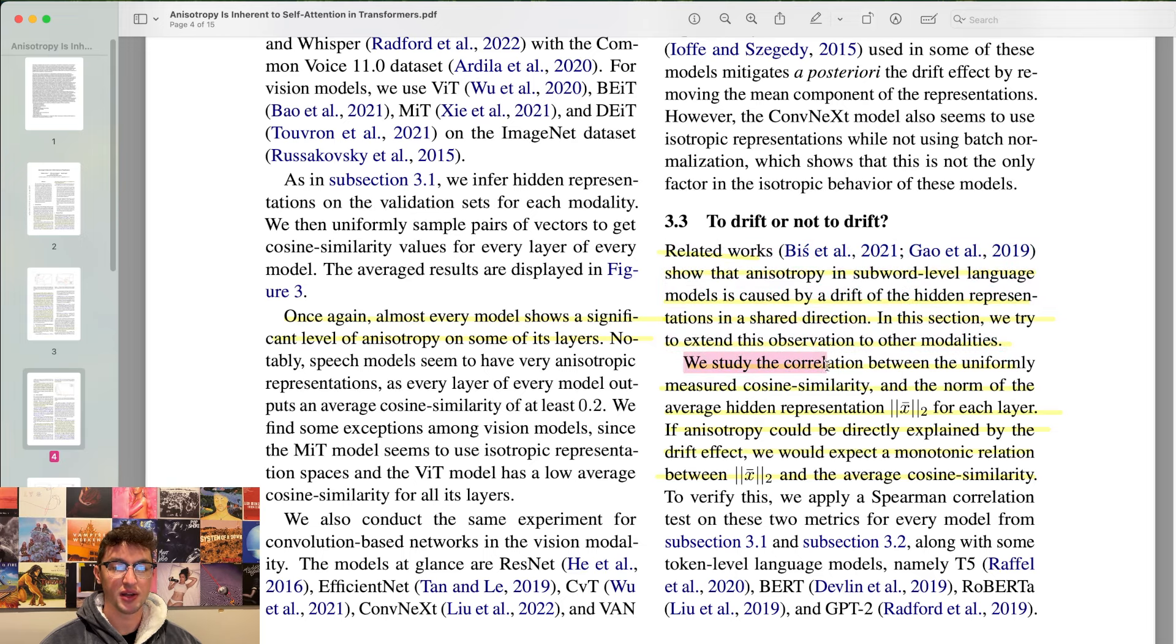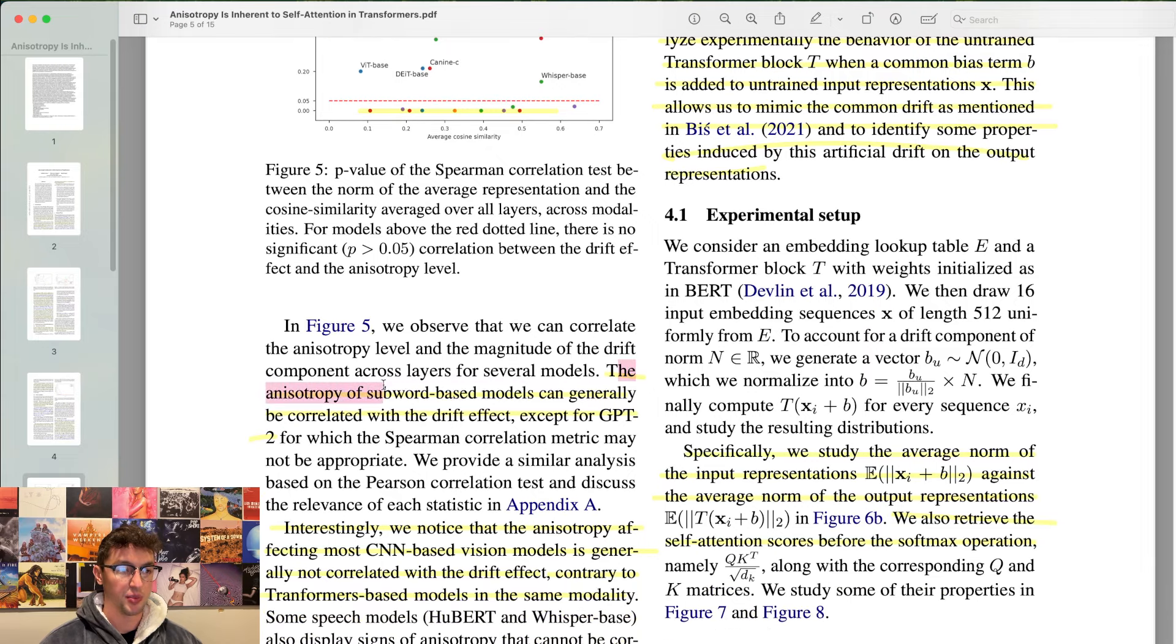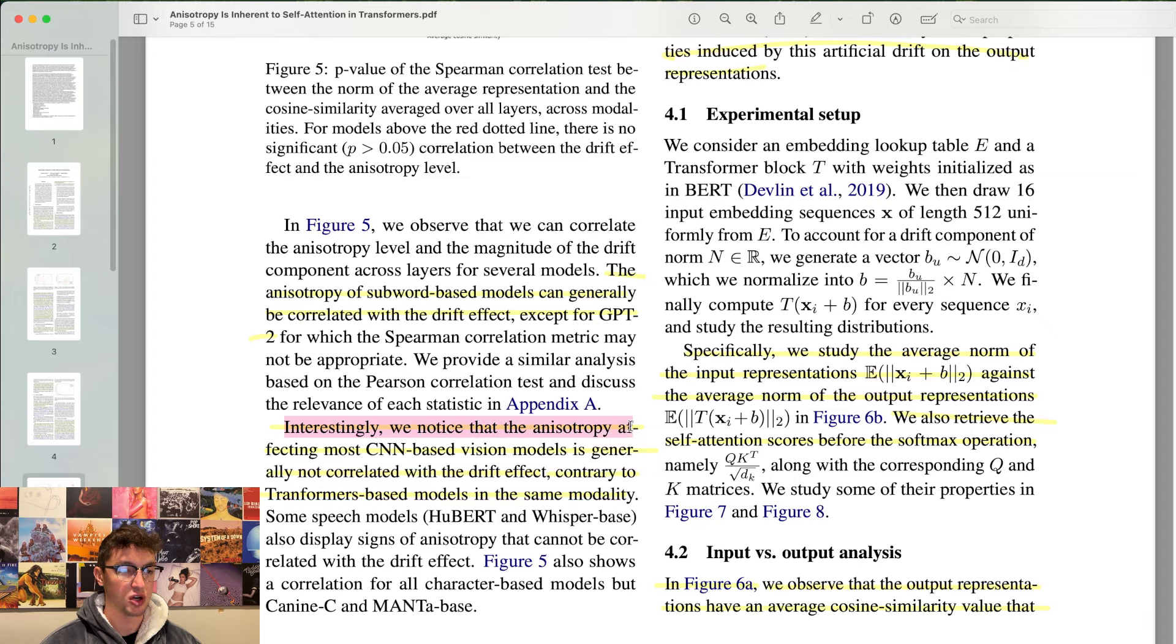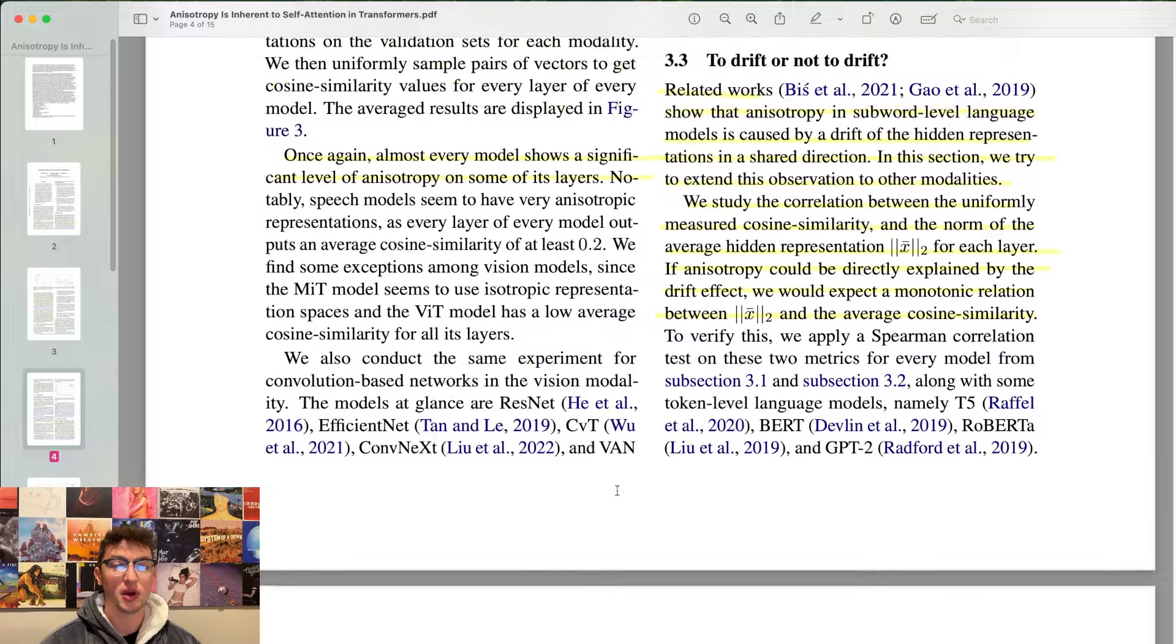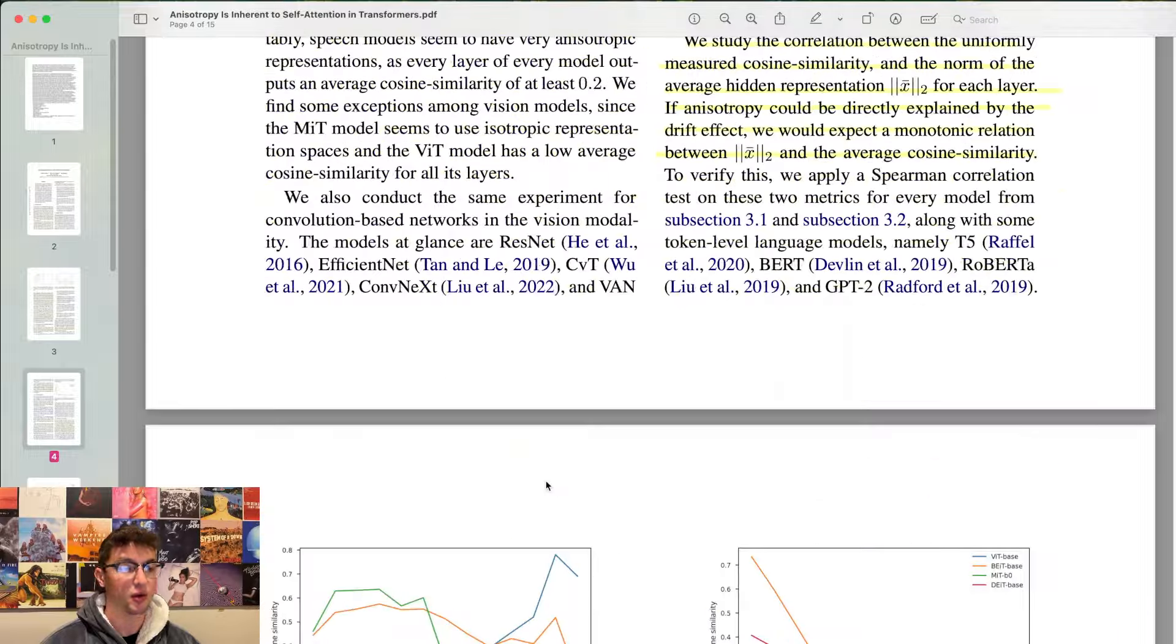Related works show that anisotropy in subword-level language models is caused by a drift of the hidden representations in a shared direction. In this section, we try to extend this observation to other modalities. We study the correlation between the uniformly measured cosine similarity and the norm of the average hidden representation for each layer. If anisotropy could be directly explained by the drift effect, we would expect a monotonic relation between the norm and the average cosine similarity. The anisotropy of subword-based models can generally be correlated with the drift effect except for GPT-2.